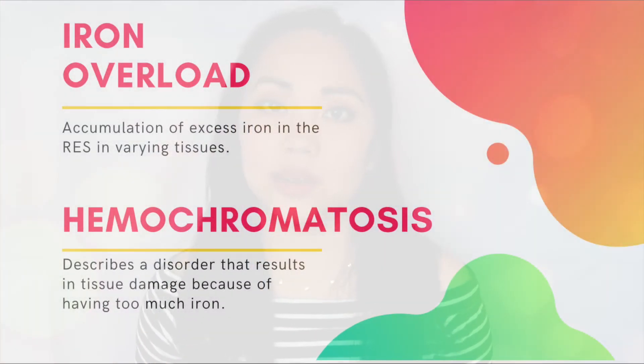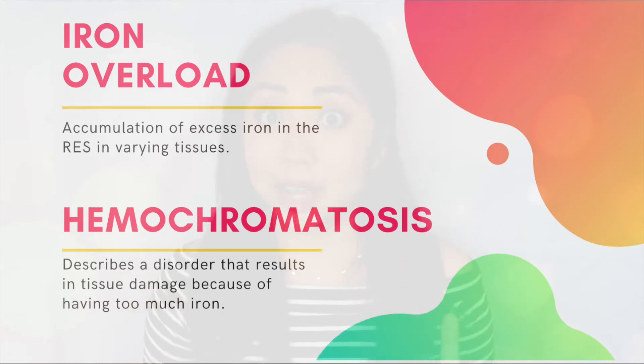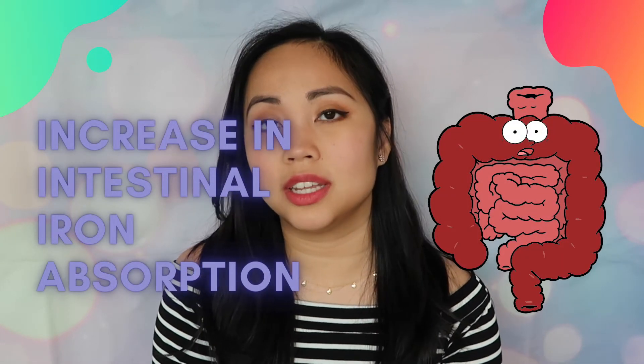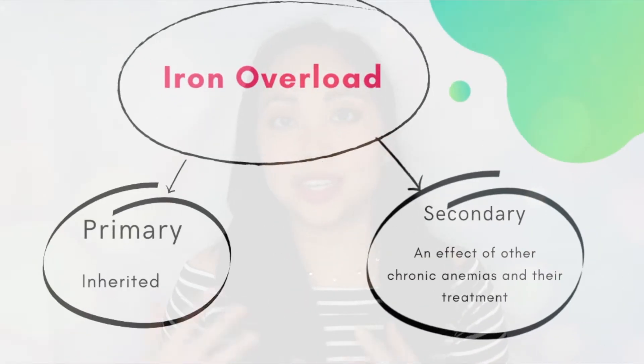Iron overload is the accumulation of iron in the RES, or reticuloendothelial system cells, in varying tissues. Hemochromatosis describes a disorder that results from tissue damage due to the accumulation of iron. So if you have too much iron and it results in damage, that is hemochromatosis. In hemochromatosis, there is an increased amount of iron absorption in the intestines, leading to an excess accumulation of iron in the tissues. Iron overload can be primary, which means genetic, or secondary, meaning a previous anemia caused the iron overload.